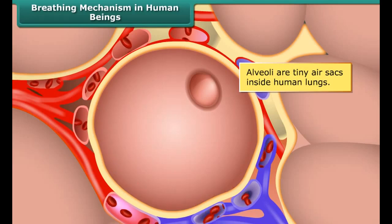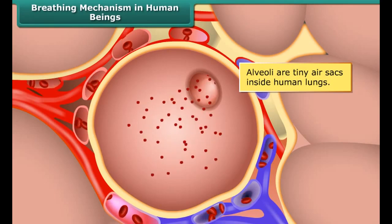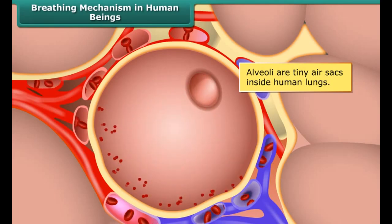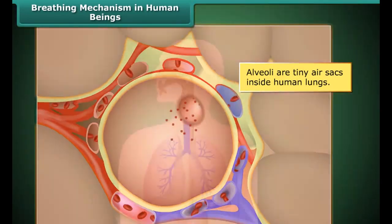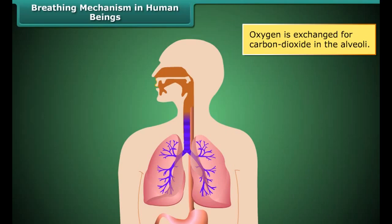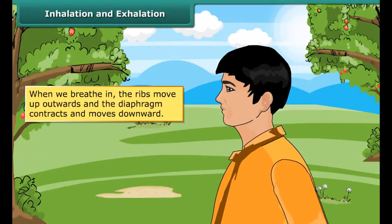Once the inhaled air reaches the lungs, it enters tiny air sacs known as alveoli. Here in the alveoli, gas exchange takes place: oxygen is exchanged for carbon dioxide. The oxygen in the alveoli travels into the bloodstream and is used in cellular respiration. The carbon dioxide in the blood moves into the alveoli and is expelled out of the human body through exhalation.